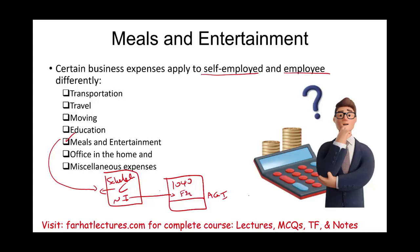If you are an employee and you incur meals and entertainment, you will prepare Schedule A. And if you have any of those meal expenses, you will deduct them on Schedule A, which are suspended from the year 2018 to 2025. Then they are deducted from AGI, or below the line.